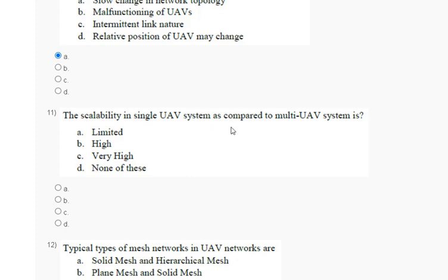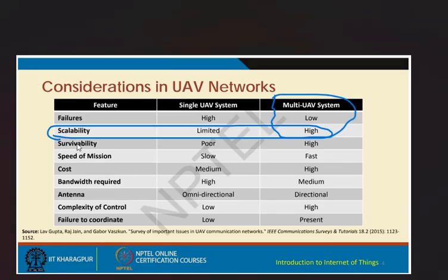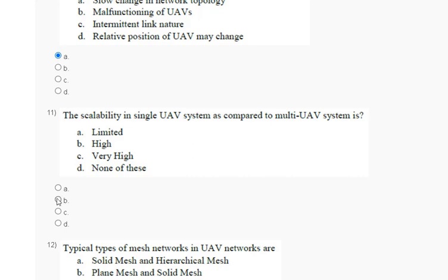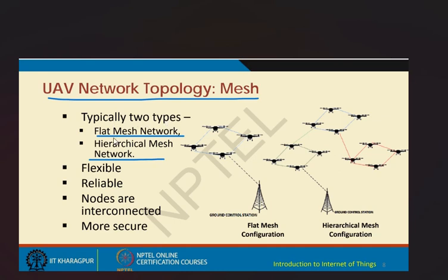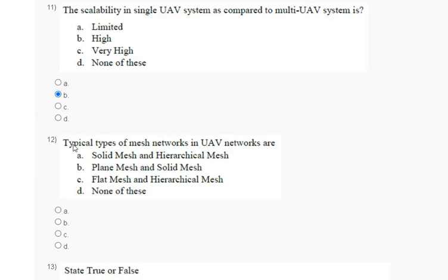Question eleven: the accessibility in a single UV system as compared to a multi UV system is — options: limited; high; very high; none of these. The explanation: accessibility in a multi UV system is high. The correct answer for question eleven is option B. Question twelve: the correct answer is option C.